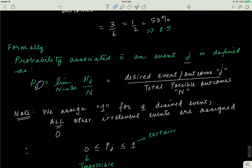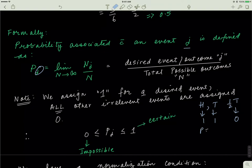For example, the probability of getting half a head when flipping a coin: since half a head is irrelevant, it gets a value of 0, so that probability is 0 — the event is impossible. The probability of growing wings in the next 2 seconds is 0. The probability of taking a breath in the next 5 minutes is 100%. Probabilities range from 0 to 1; they're never negative and never over 100%. You can't be 102% sure something will happen.